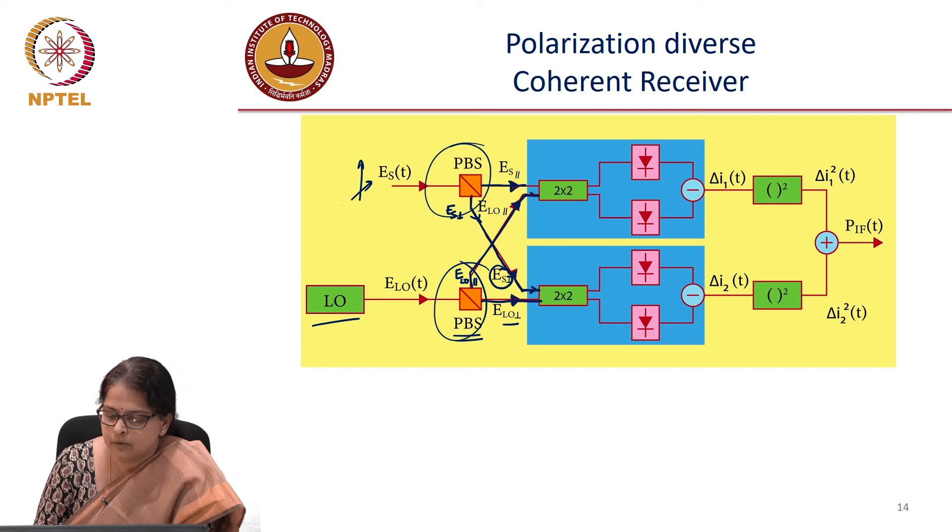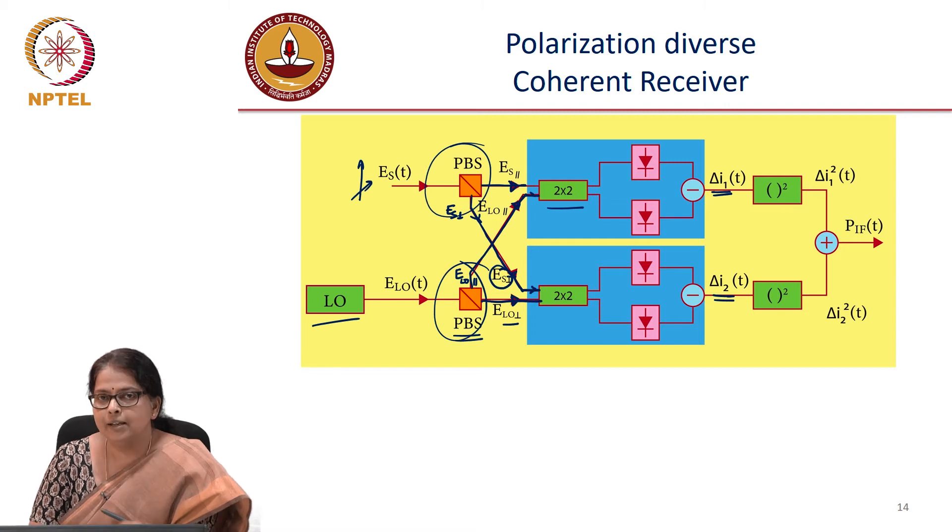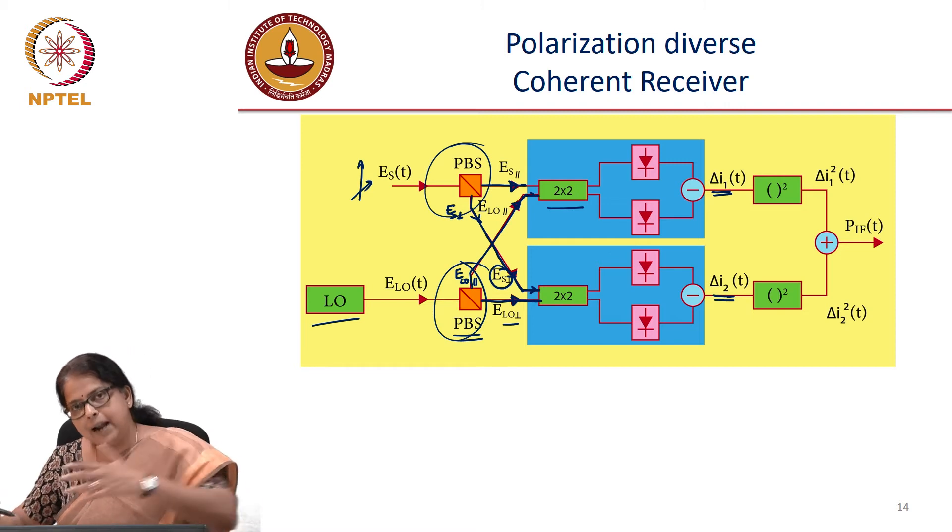And the rest is the same. You take it through the 2 by 2 coupler, take it through the balance receiver, you get a delta I1 corresponding to the first polarization. You get a delta I2 corresponding to the second polarization. And ultimately you add up the currents.